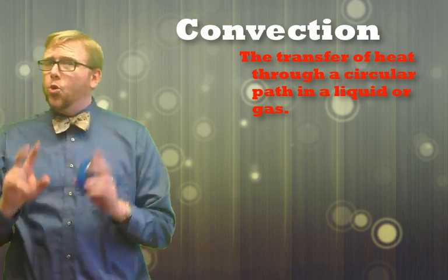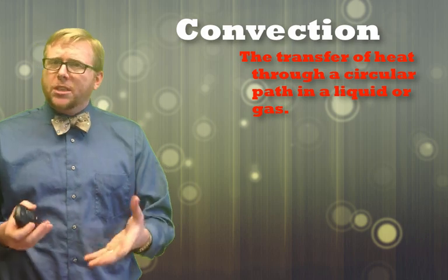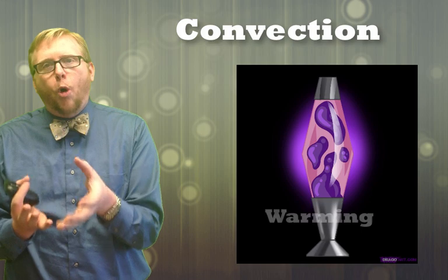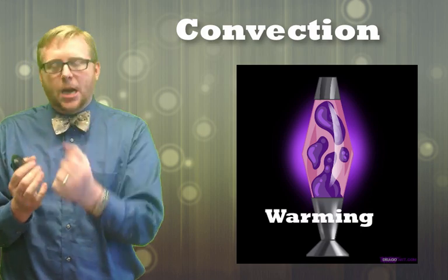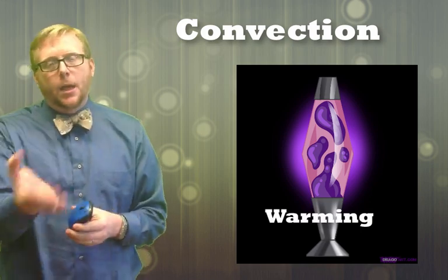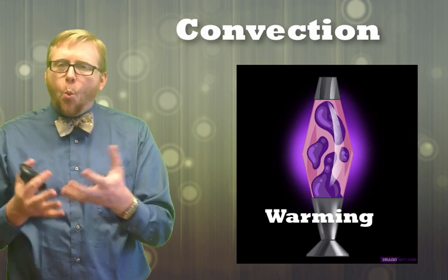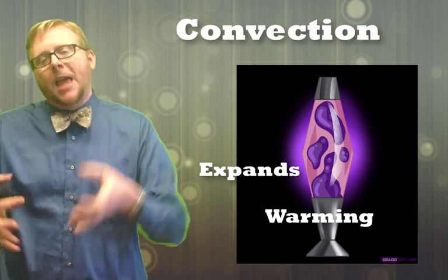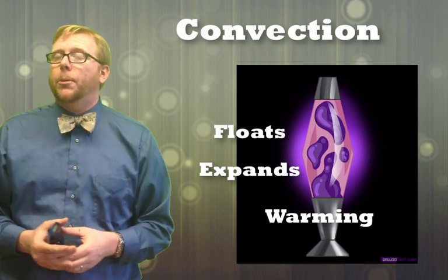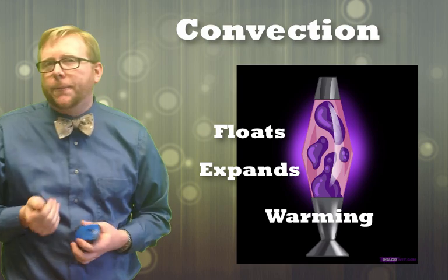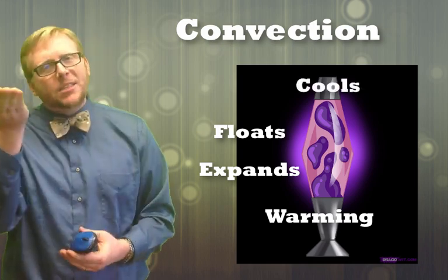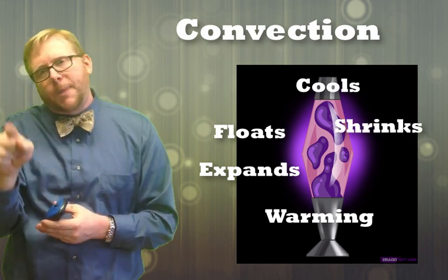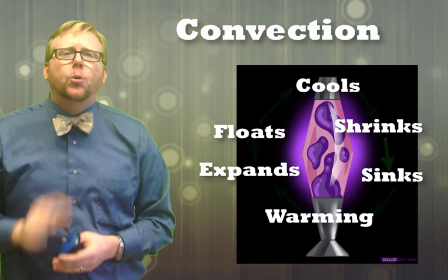That process creates what is called convection, and it's also what makes a lava lamp so groovy. Conduction from the light bulb warms up the glass and heats the oil and wax. When the wax gets warm and liquid, it expands and becomes less dense, so it floats up away from the light bulb. As it moves up and away, it starts to cool, and when it gets to the top it's colder — so it shrinks, becomes more dense, and sinks back down. That's what makes the loop of a lava lamp.